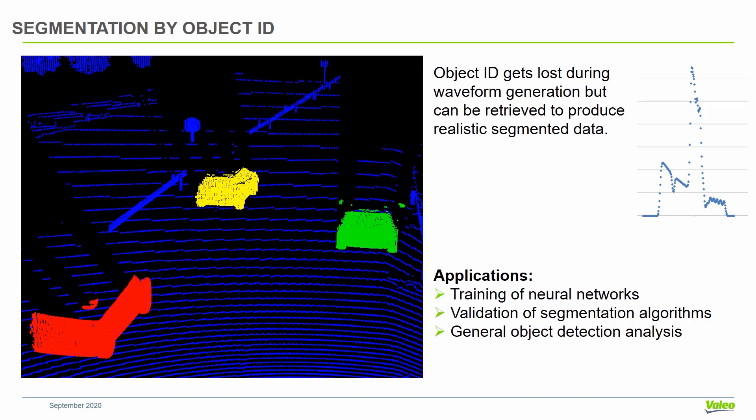We can use this data to train neural networks, validate segmentation algorithms or support their development, and use this data for general object detection algorithm analysis. For example, if you want to know if some object is detected at specific resolution or not, you can simply count the points.